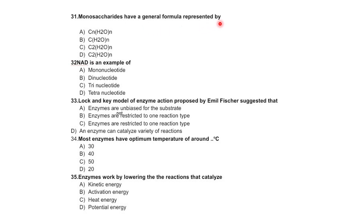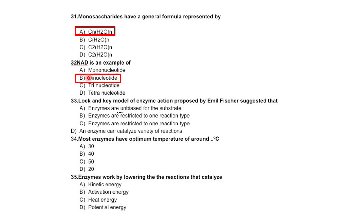Monosaccharides have a general formula represented by a specific ratio. NAD is an example of a mononucleotide, dinucleotide, trinucleotide, or tetranucleotide. NAD is the abbreviation of nicotinamide adenine dinucleotide, so the correct option is dinucleotide.